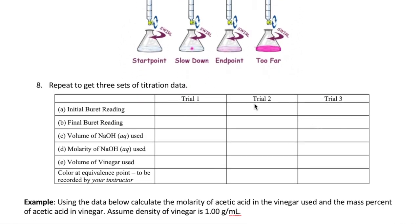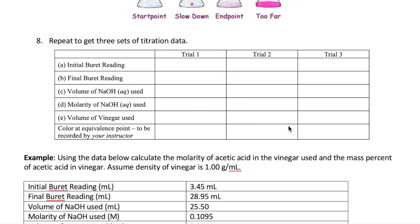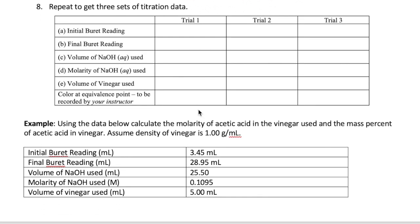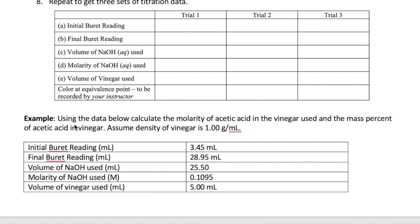In the actual experiment, you'll repeat the titration three times — one person does the first, your partner does the second, and both of you do the third together. The data collected will then be used to calculate the concentration of acetic acid in the vinegar.